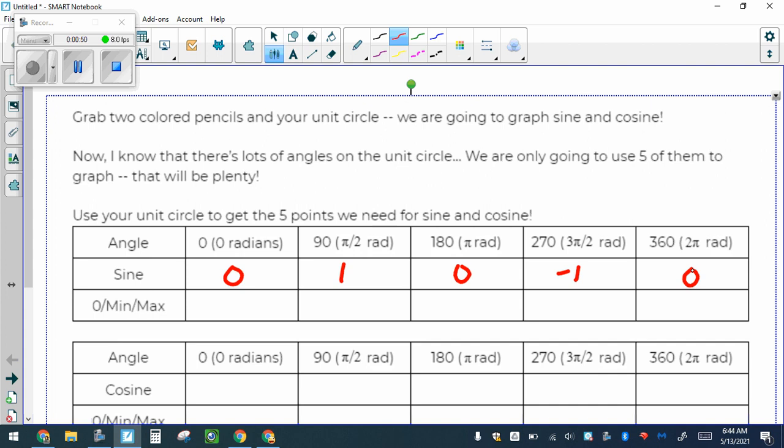I put the 0/min/max thing here because more than the numbers, what I really care about is where it hits the high points and where it hits 0. Here I hit 0, 1 is the maximum—that's the highest it's going to get—back to 0, a minimum (the lowest it's going to get), and then back to 0.